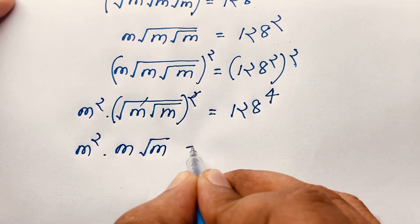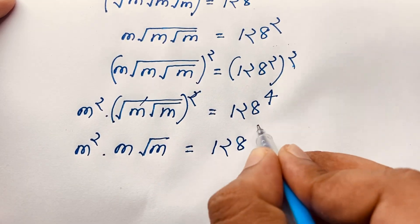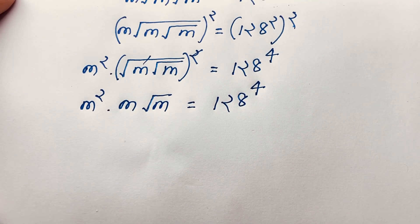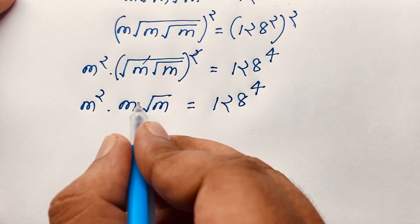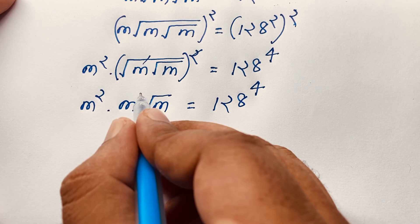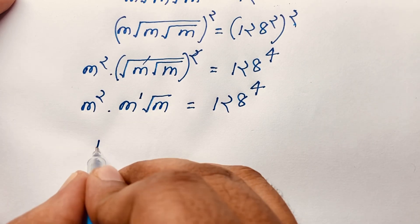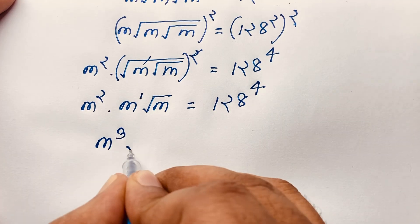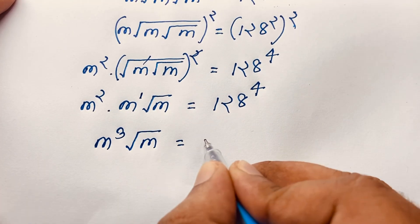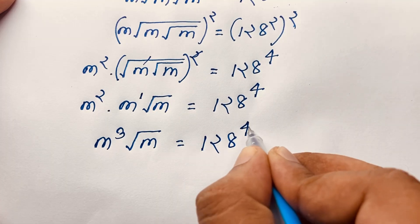So m equals 128 to the power 4. Now you can see m to the power 3, since the exponent is 1, it will be 2 plus 1, giving m to the power 3. And here the square root of m equals 128 to the power 4.